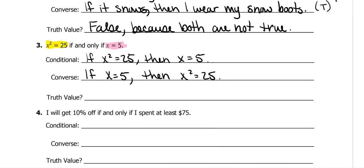Now we've got to talk about the truth values. The first one says: if x squared equals 25, then x equals 5. I know most of you think that's true, but it's not. There is another number that when you square it also gives you 25 — you have to think about the other side of the number line. This one is false because negative 5 squared gives you positive 25, since negative 5 times negative 5 equals positive 25. So the conditional is false, and the counter example would be x equals negative 5.